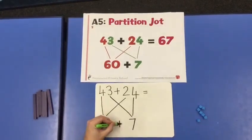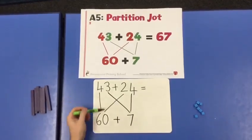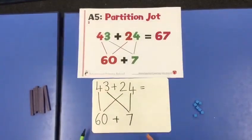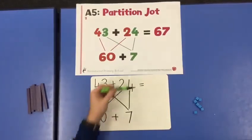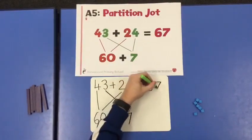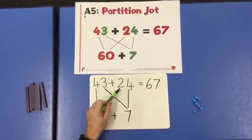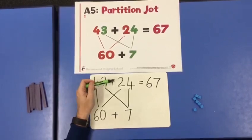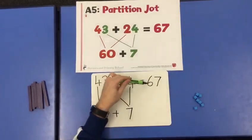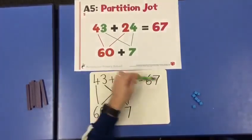So we've partitioned into tens and ones and now we recombine, we put them together. 60 and 7, 67. 43 add 24 equals 67. 4 tens and 3 ones add 2 tens and 4 ones equals 6 tens and 7 ones, 67.